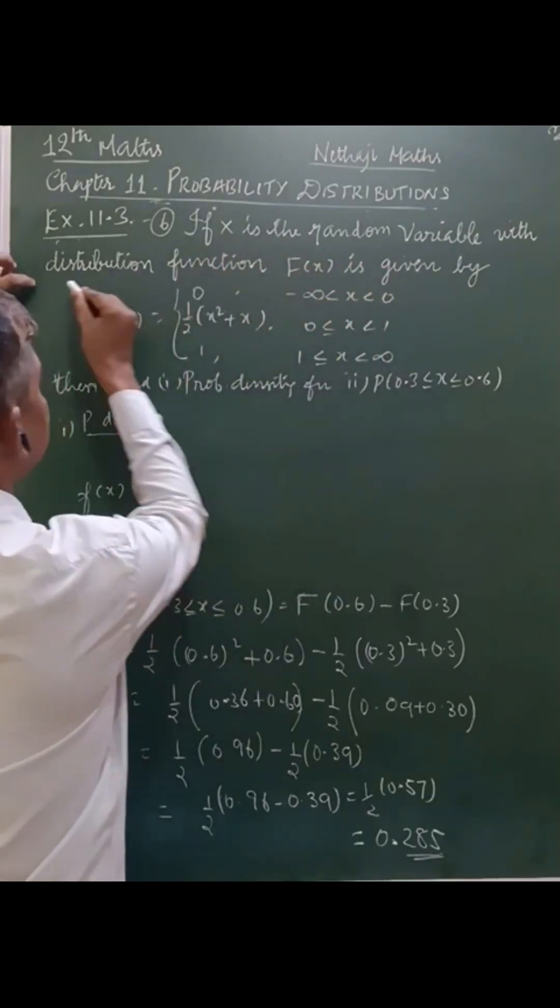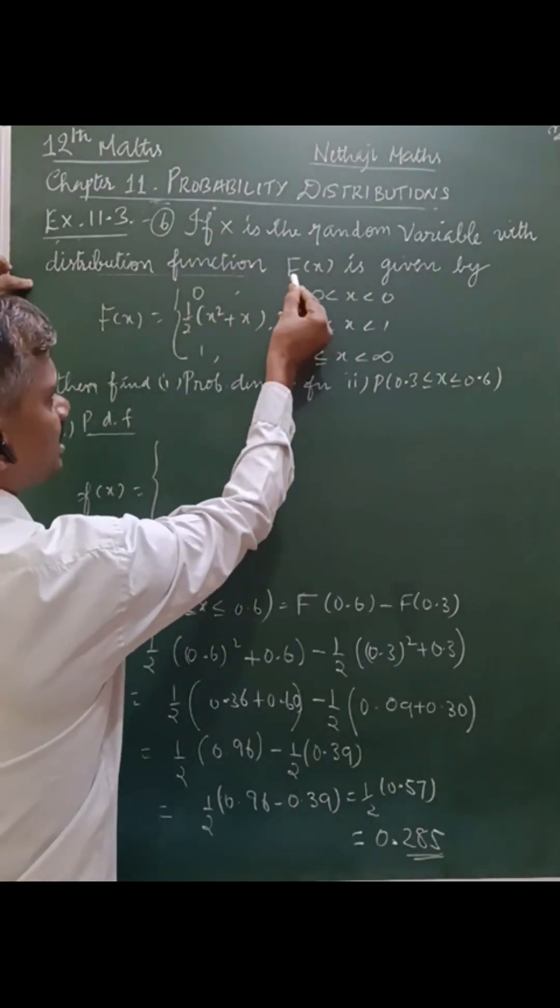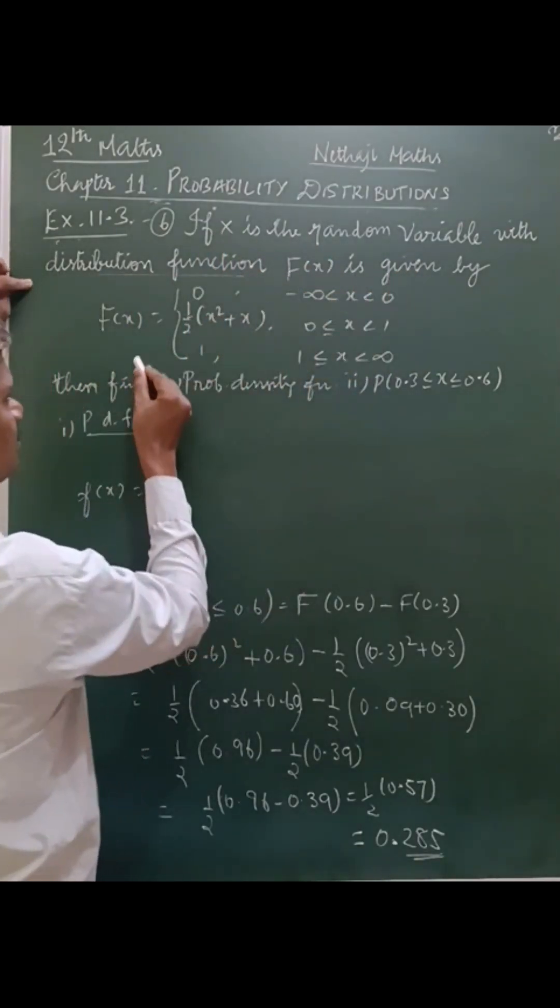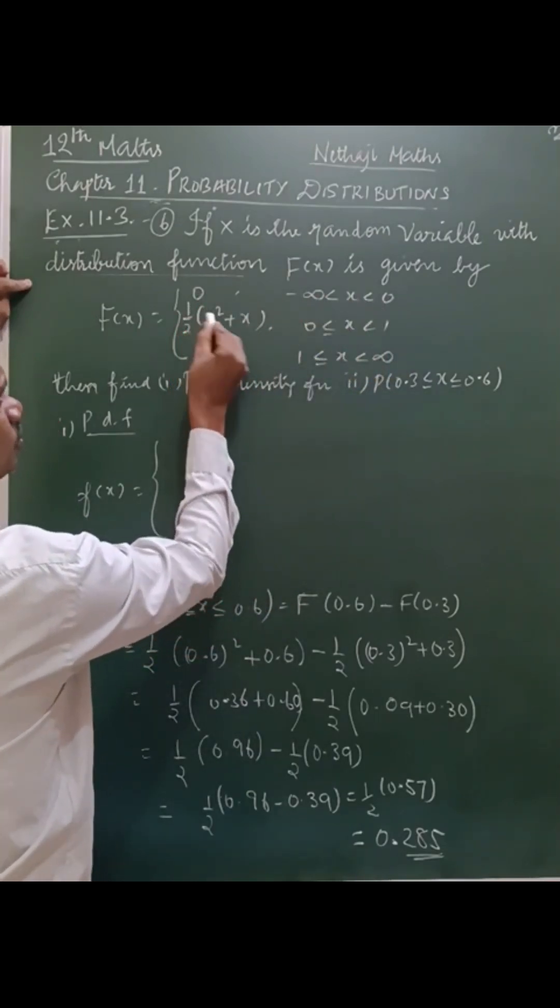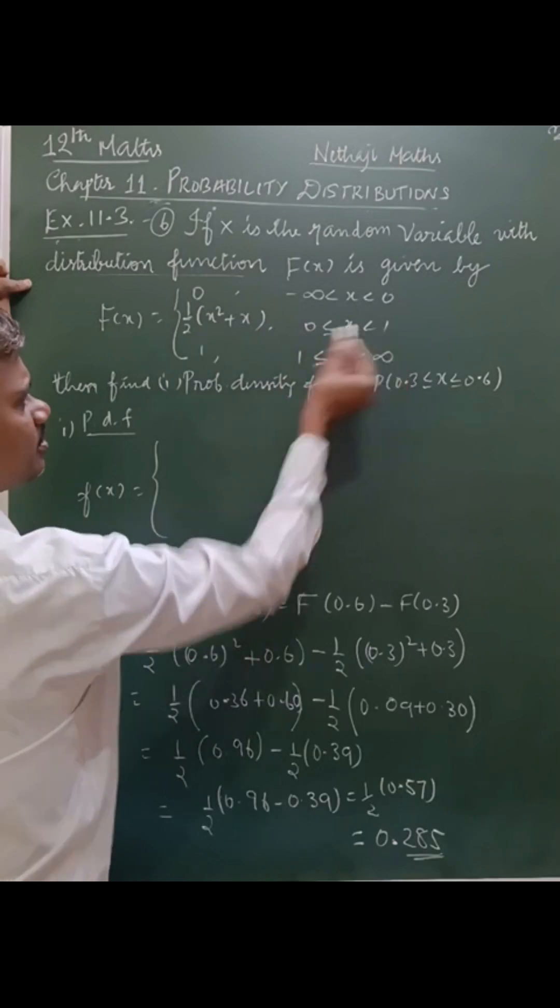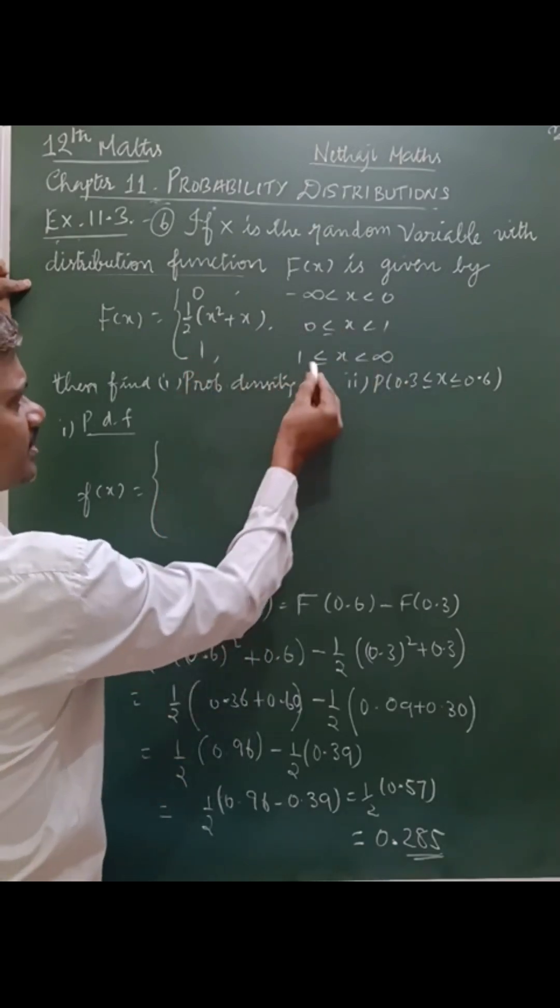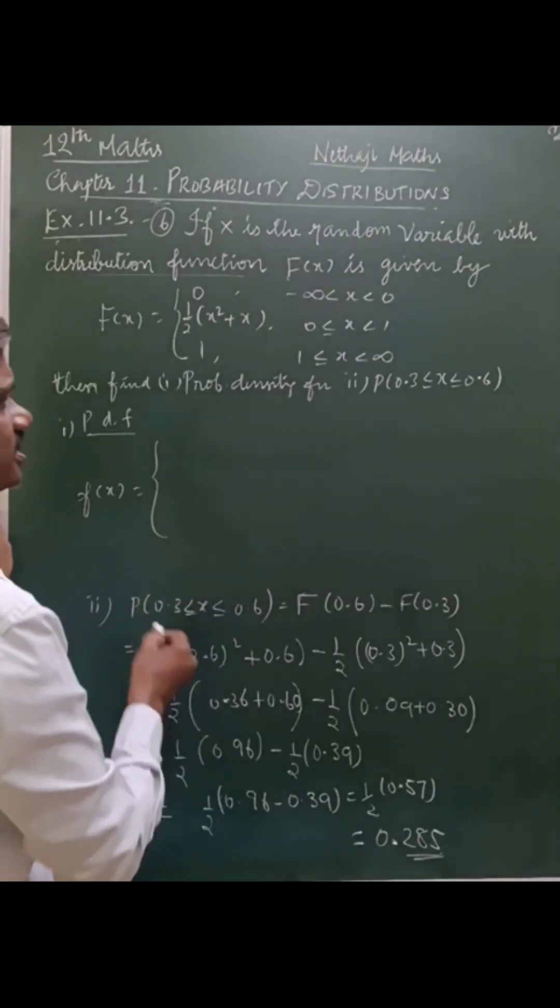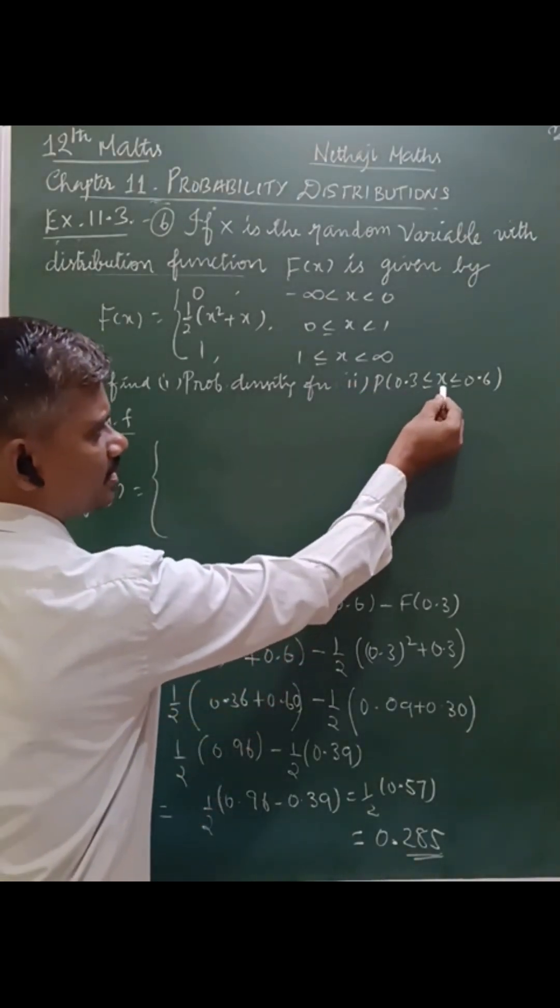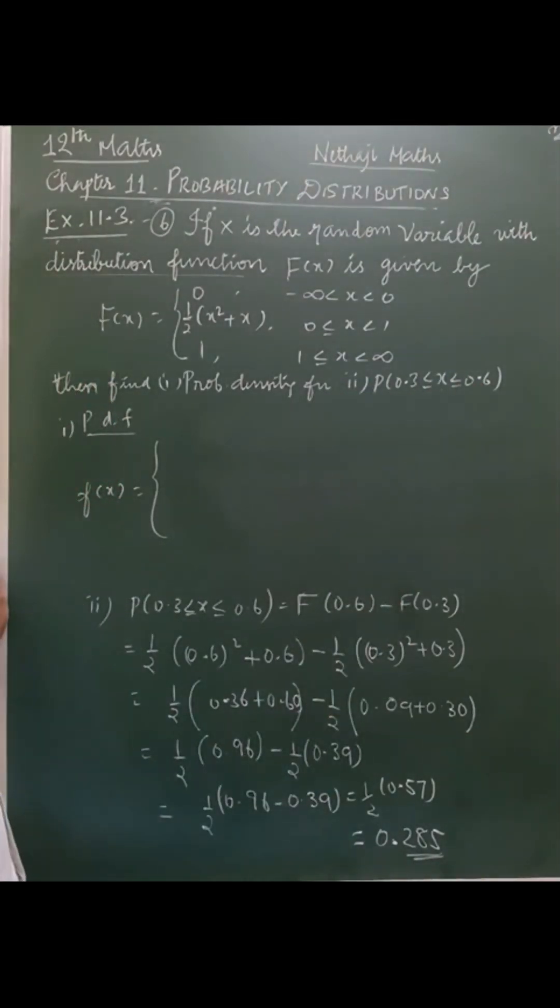The question is: if X is the random variable with distribution function capital F(x) given by 0 for the interval minus infinity to 0, half times x squared plus x for 0 to 1, and 1 for 1 to infinity, then you have to find the probability density function and the probability between 0.3 to 0.6.